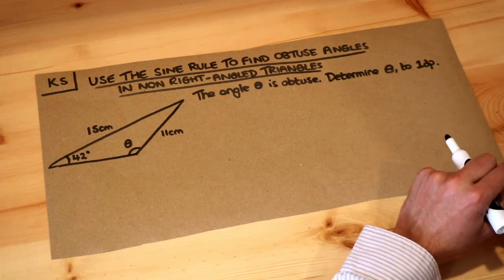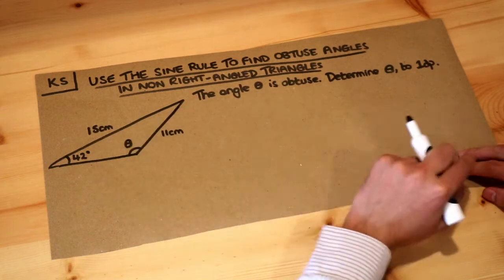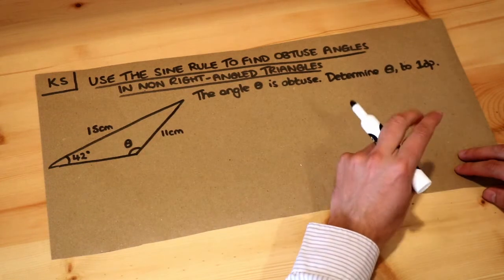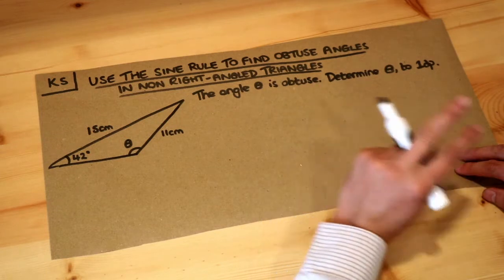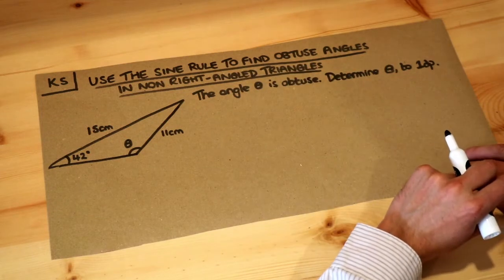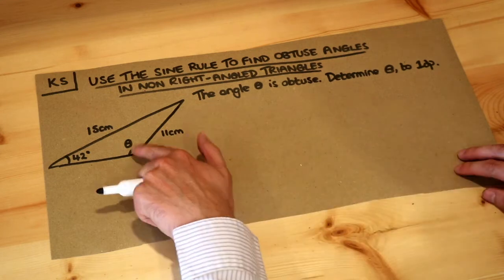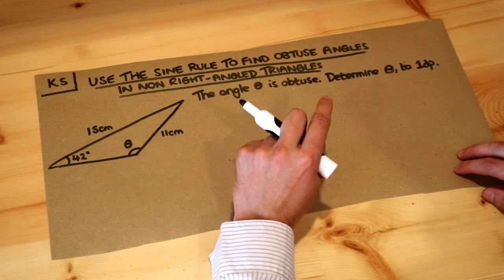Hopefully you've seen the previous video where we used the sine rule to find an unknown angle in a non-right angle triangle. If you haven't seen that video yet or you don't understand that method, please watch that first because otherwise it's not going to make much sense. Now we want to find the unknown angle again, but this time we want to find an obtuse angle.